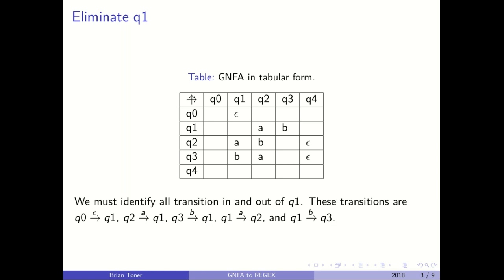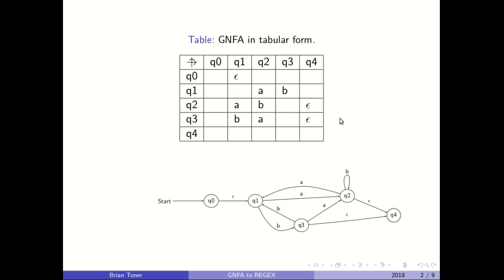So the first thing that we have to do to convert this GNFA and eliminate our Q1 is we have to identify all the transitions in and out of Q1. These transitions are Q0 goes to Q1 through epsilon, as we mentioned before. Then we also can see that Q2 goes to Q1 through alpha, Q3 goes to Q1 through beta, Q1 goes to Q2 using A or alpha, and Q1 goes to Q3 through B. So this is all pretty straightforward. You can see that easily from both the table and if you were to actually use this graphical representation here.